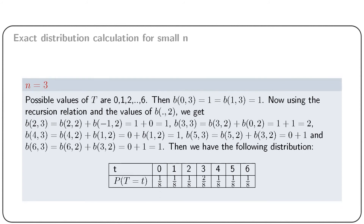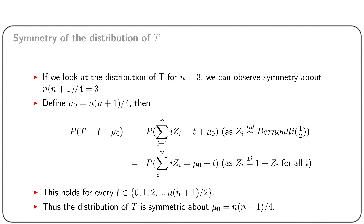Next, consider n = 3. Using the recursion, the distribution can be obtained; however, we skip the details. If we look at the distribution of T, we see that the PMF increases to a maximum and then decreases. The maximum occurs at 3, that is at the n(n+1)/4 value of the distribution. This means the distribution is symmetric about mu_0 = n(n+1)/4. We now formally prove that the null distribution of T is symmetric about mu_0.